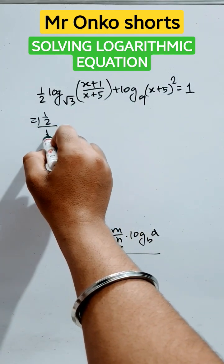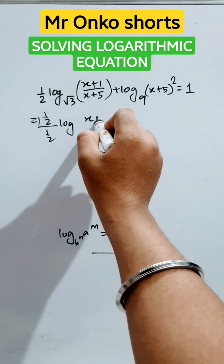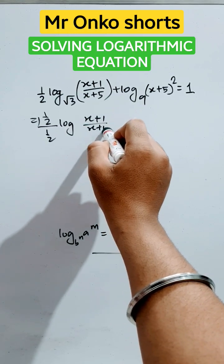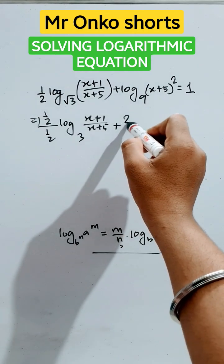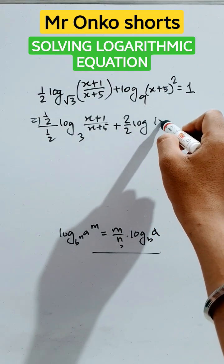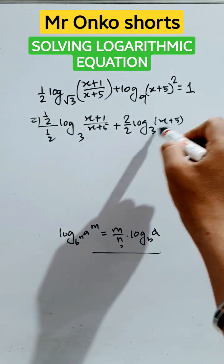It will be half divided by half logarithm of x plus 1 by x plus 5 to the base 3, plus here it is 3 squared and square, 2 by 2 logarithm of x plus 5 to the base 3 equals 1.